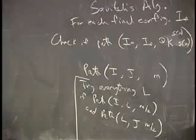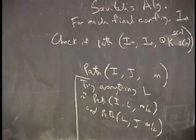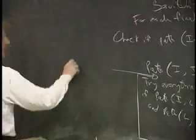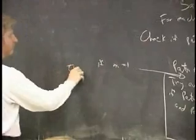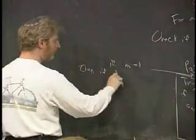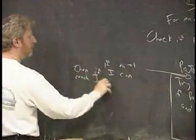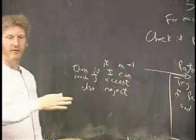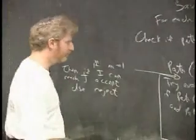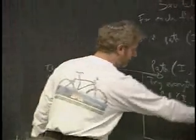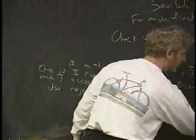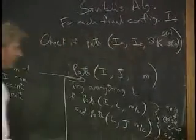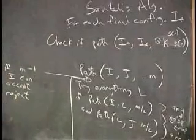Okay, it's recursive. What's the base case? If there's one step in between them, you don't split them into two parts. So, we'll put that in here. There needs to be a base case. If M equals one, then if I can reach J, accept, else reject. So, if there's only one step between them, check directly whether I can accept J. So, try every single L. If any of these are true, then accept. Otherwise, reject. That's the idea. Three lines.